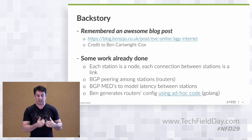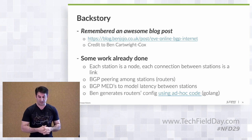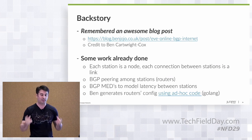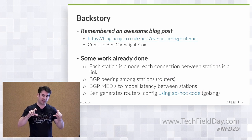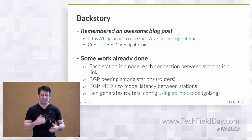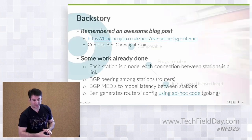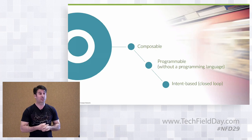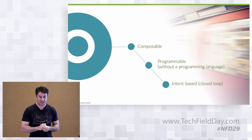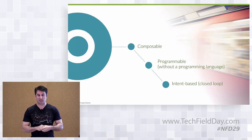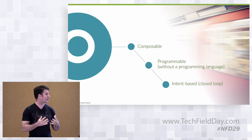The cumulative MED value across all traversed links gives you the real path, so when you run traceroute you get the route that Google Maps would also suggest. In the original blog post, Ben generated the router configurations using ad hoc Go code and spun up minimal Ubuntu distributions where the configuration was pushed as a static file. That's where the idea to use Freeform came in — to extend and improve on this exercise.